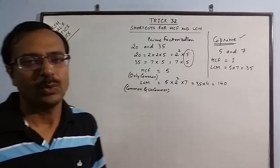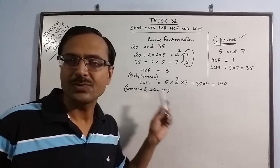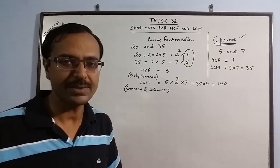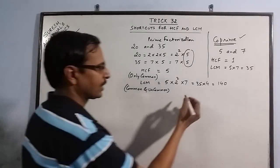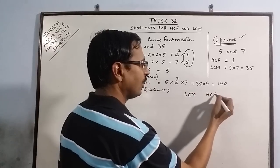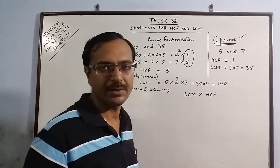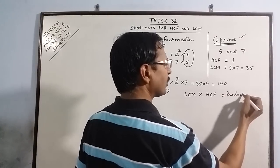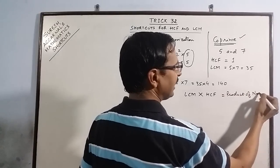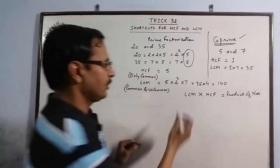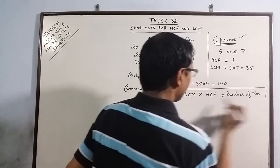Now we have one result which is very important concerning the LCM and HCF of two numbers which is this. LCM and HCF of two numbers when multiplied will give you product which is equal to the product of the two numbers which we have taken for calculating the LCM and HCF. This is a very very important result for competitive exams.